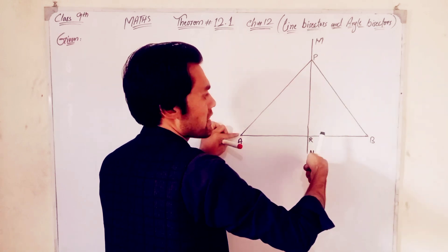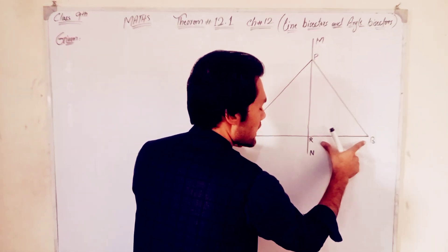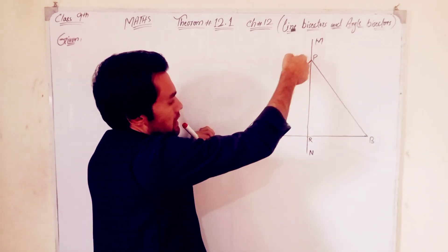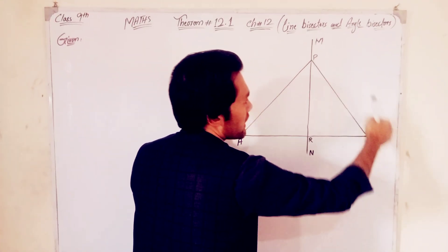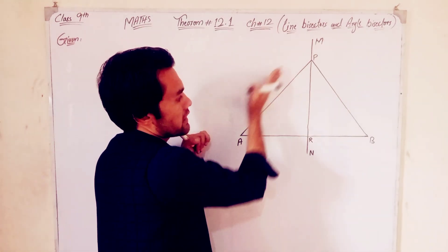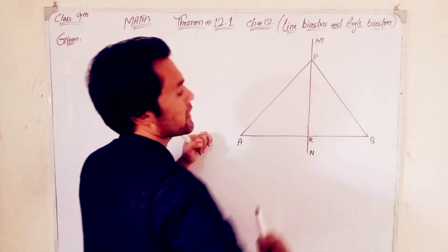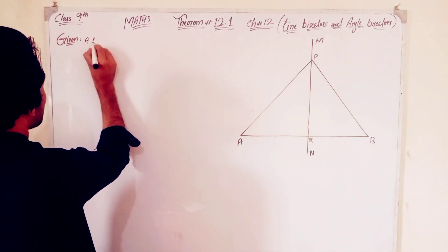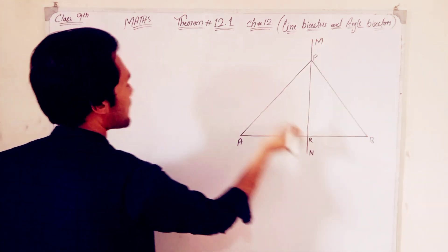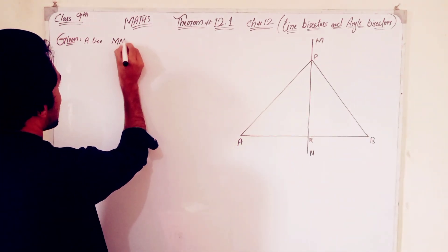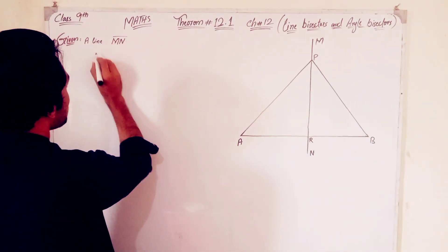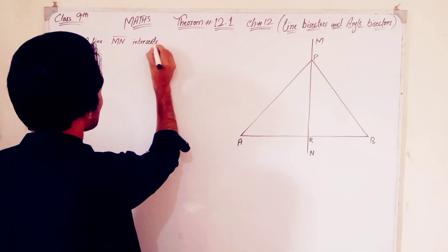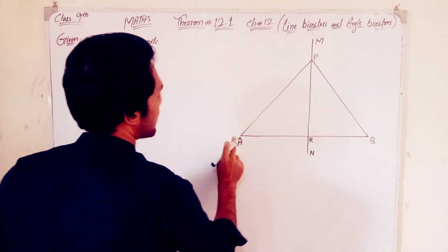This side is equal to that side — divide. The problem is P and A are equal to A, and P and B are equal to A. Equidistant. This means A is equal to A. The line MN is equal to line MN, which intersects line AB.